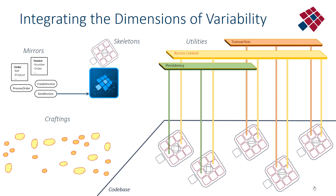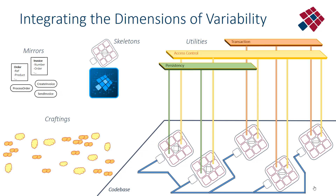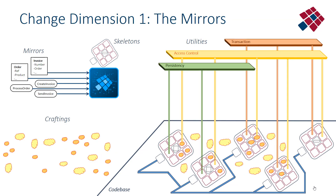When all these elements have been instantiated and connected with the various frameworks dealing with the cross-cutting concerns, we can add the custom code. This consists of injections — code snippets being injected into the various anchor points of the generated or expanded classes — and extensions, which are separate classes in the code base that are also called from the insertions.